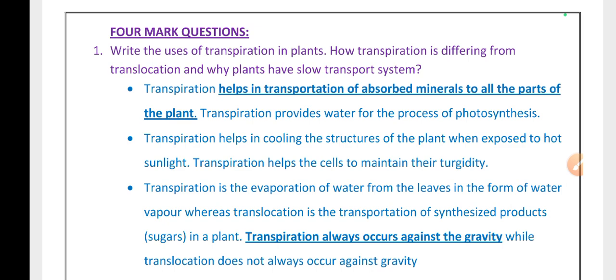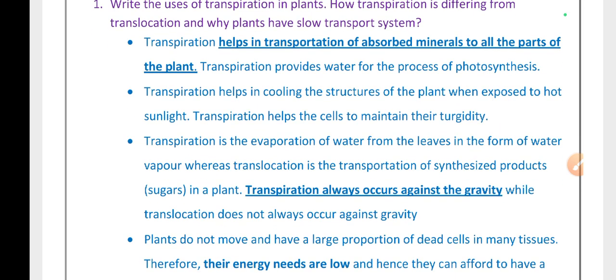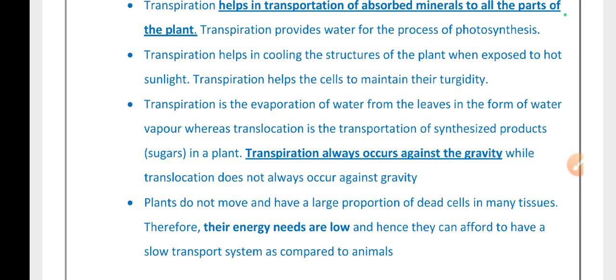Transpiration helps the cells to maintain their turgidity. Transpiration is the evaporation of water from the leaves in the form of water vapor, whereas translocation is the transportation of synthesized products (sugars) in a plant.